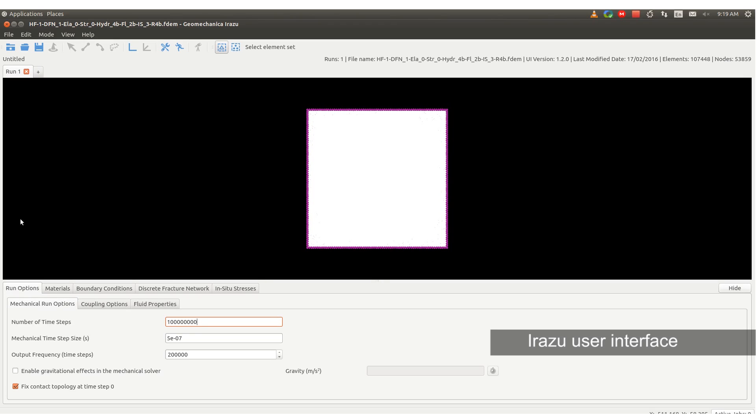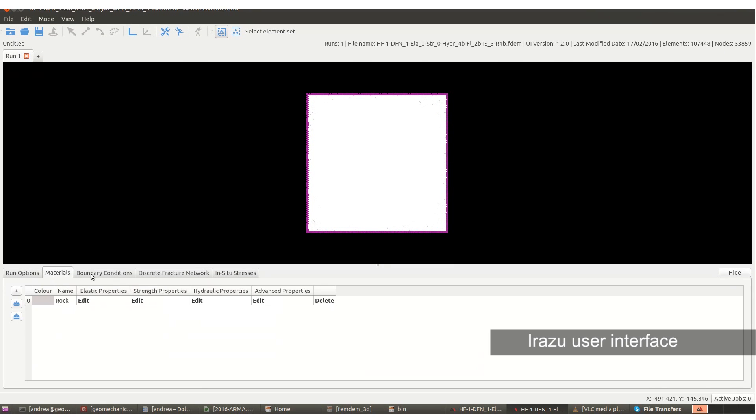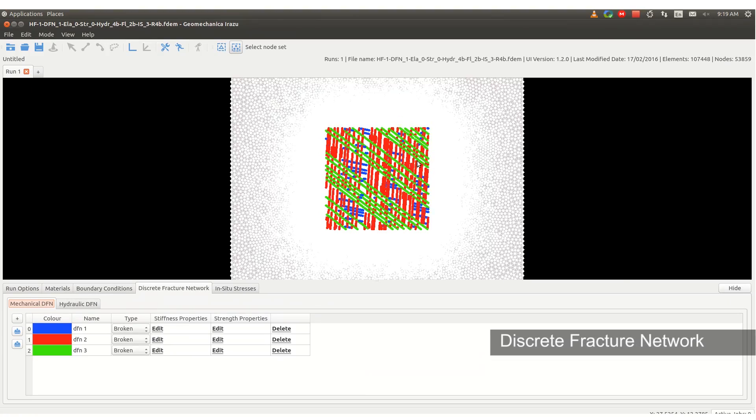Here we see the example model open in the Aratsu user interface. Using this interface, all modeling parameters can be easily assigned and edited, including the material properties, boundary conditions, and characteristics of the discrete fracture network.